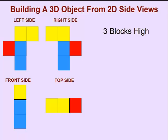A good place to start is by noticing the dimensions. We can tell by looking at the front, left, and right side that this object is three blocks high. We know that the bottom block must be blue, and there must be a blue block on top of this block.